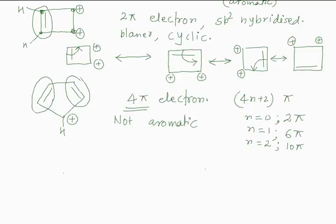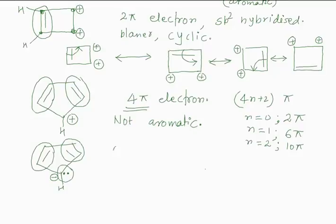The corresponding anion will be aromatic. If we take the anion of the same compound, there is a lone pair of electrons, and now the system has 6 pi electrons — 2 plus 2 plus 2 equals 6 pi electrons. So this system is aromatic. One can check delocalization by drawing 5 resonating structures for this compound.